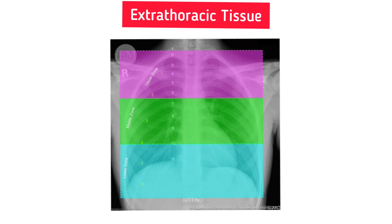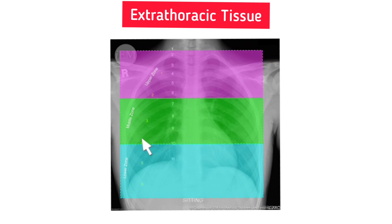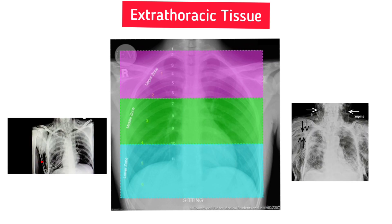Next, extra-thoracic tissues — mostly this means the lung parenchyma. Lung fields can be divided into zones: upper zone from the apex to the second costal cartilage, middle zone between the second and fourth costal cartilage, and lower zone between the fourth and sixth costal cartilage. You should also check soft tissues outside the thorax for subcutaneous air or foreign body densities.